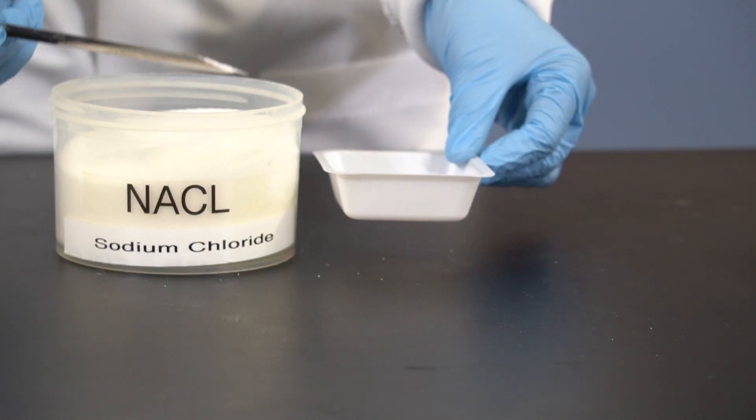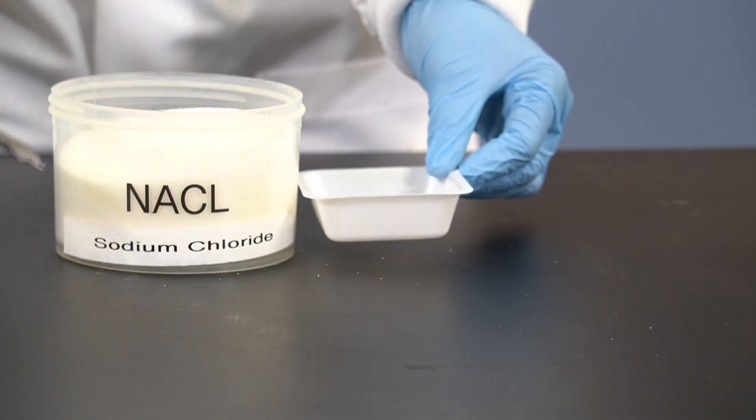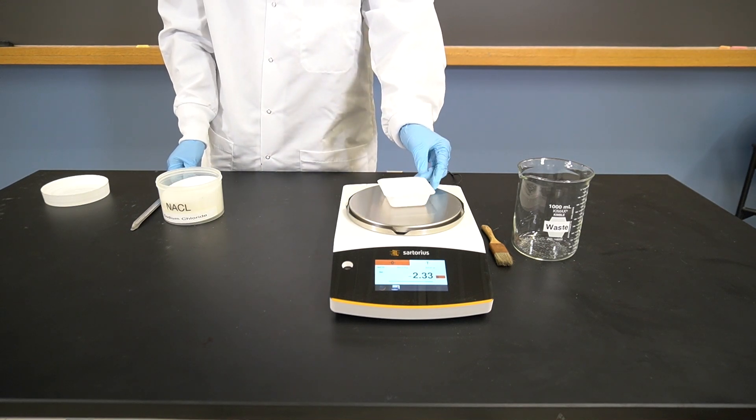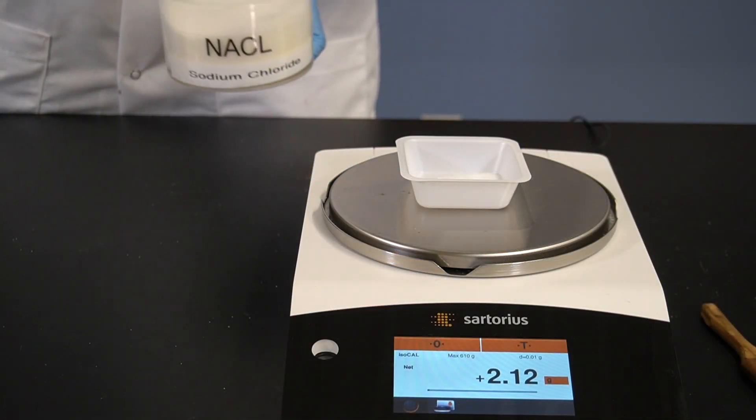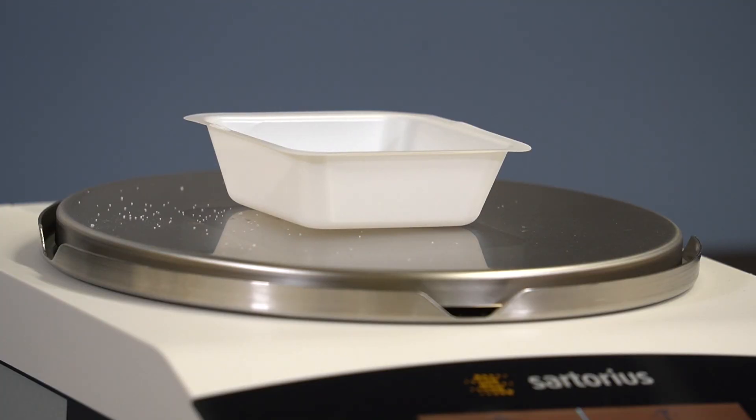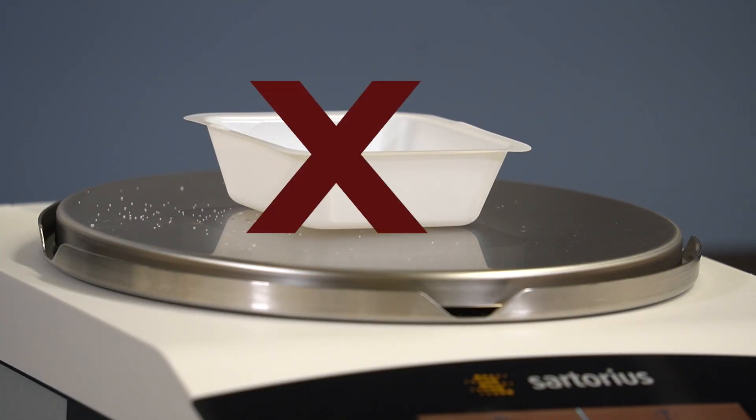Next, we can add the sample to the weighing boat using a spatula. It is important to add the sample to the boat on the side of the balance, rather than adding it while the boat is on the balance. This is to prevent spilling chemicals on the balance, which can cause damage.